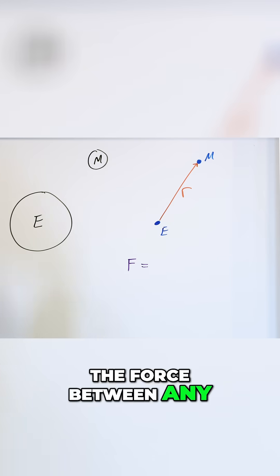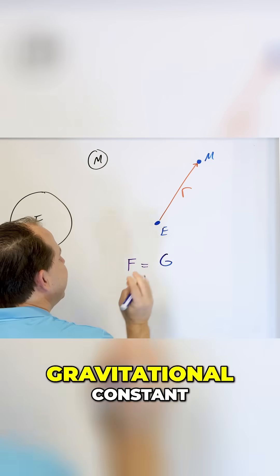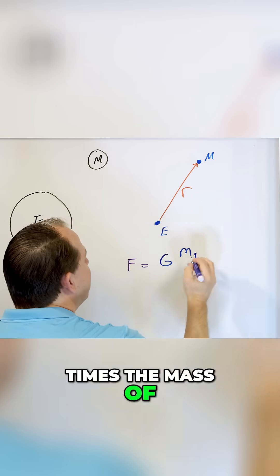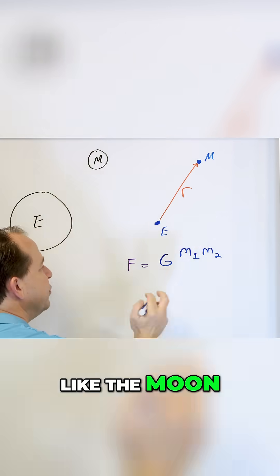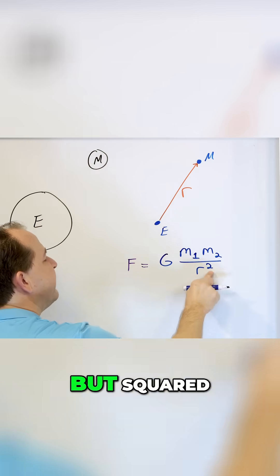The force between any two objects is equal to the gravitational constant, which is just a number, times the mass of body number one, like the Earth, times the mass of body two, like the Moon, and all of that stuff is divided by the distance between them, but squared, the distance between them.